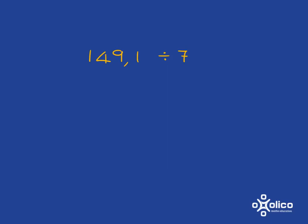So imagine we need to do 149.1 divided by 7. We're going to do it in the same way that we've always done division, and the only difference here is we just got to remember to keep the comma in the right place.